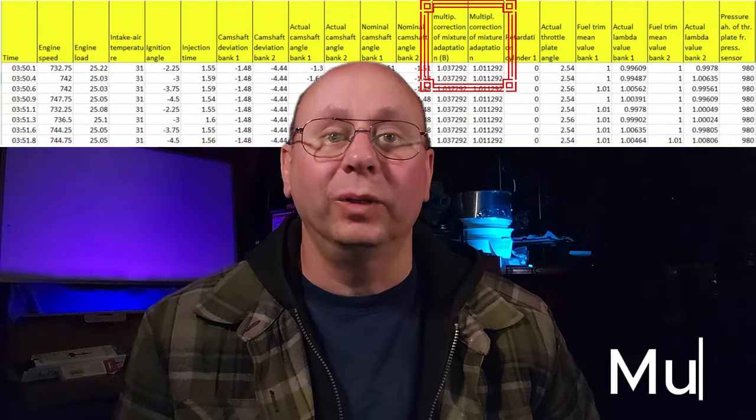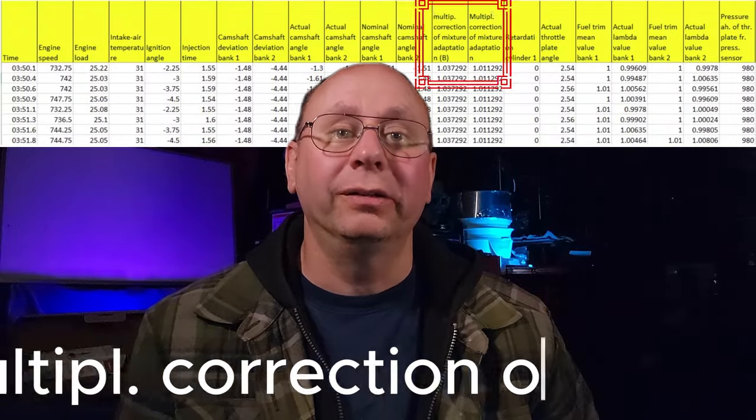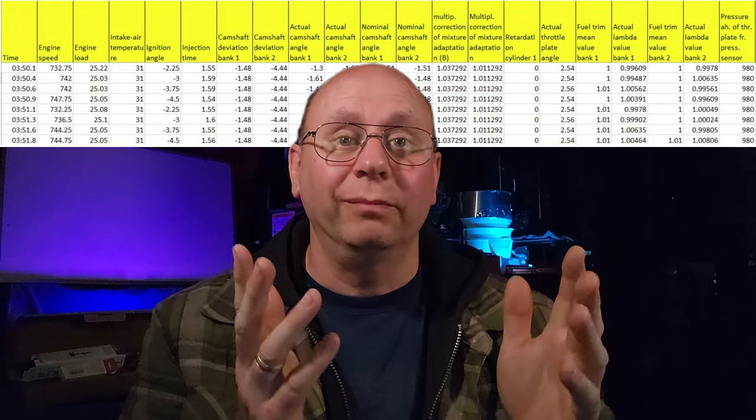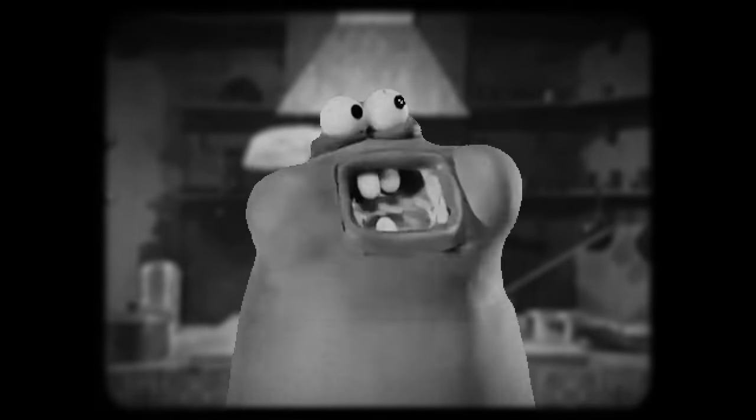The next two columns have an odd-looking value called Mult Dip Correction of Mixture Adaptation. These are what you'd see in a standard OBD2 scan tool as long-term fuel trim values. The value here, very close to 1, is where the ECU is most happy — that value tells you the ECU isn't having to do any correction, or something is broken.